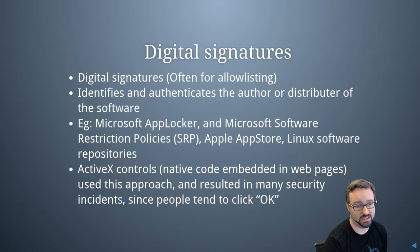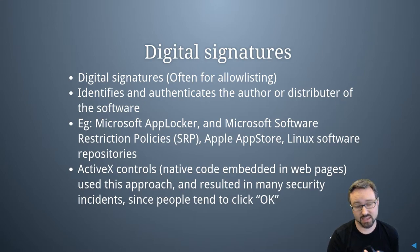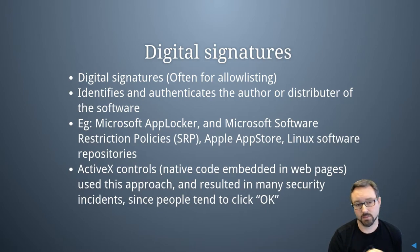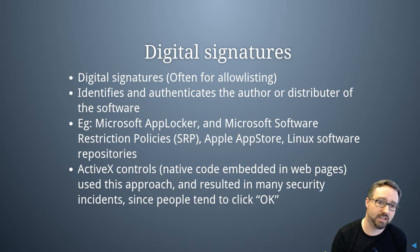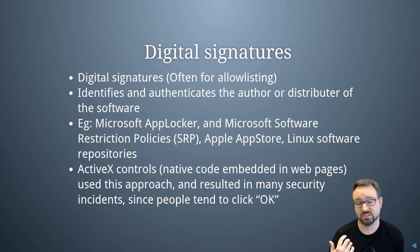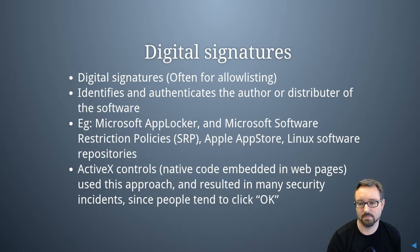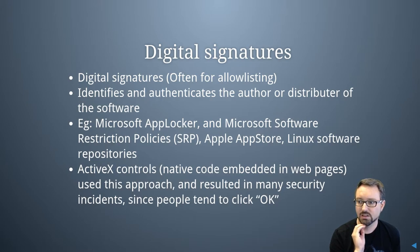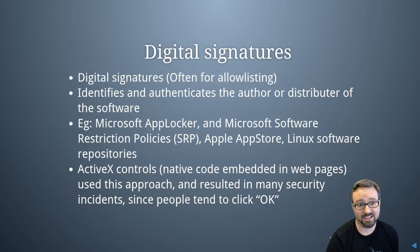For allow listing, you can use digital signatures. As a developer, you might have a private key to sign the software you create and publish your public key, allowing people to verify your code signing signature without you giving away your private key. Tools like Microsoft AppLocker, Microsoft Software Restriction Policies, Apple App Store, and Linux software repositories all use digital signatures in this way.